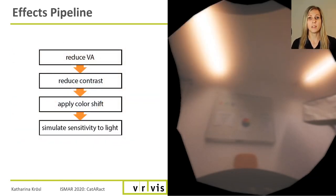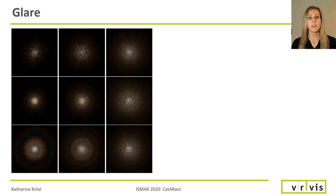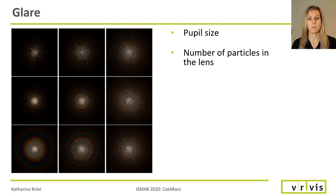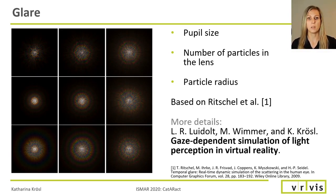Finally, we simulate sensitivity to light by applying a glare effect based on human perception and medical expertise. We can adjust our simulation and create different glare kernels depending on parameters such as pupil size, the number of particles in the lens, or particle radius. We developed this glare, which is based on the work of Ritschel and colleagues, for another of our projects, which is also presented here at ISMAR by my colleague Laura Louis-Dolt in her talk on gaze-dependent simulation of light perception in virtual reality. So if you want to know more about our glare, please watch her talk.